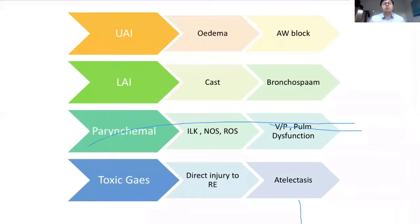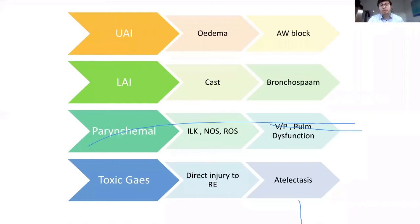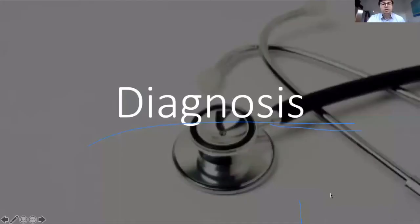To summarize the pathophysiology: upper airway injury leads to edema and airway blockage; lower airway injury leads to cast formation and bronchospasm; parenchymal injury is associated with release of interleukins, reactive oxygen and nitrogen species, leading to decreased ventilation-perfusion ratio and pulmonary dysfunction; and toxic gases cause direct injury to respiratory epithelium and indirect effects. The combined result of all these is atelectasis and pulmonary dysfunction.